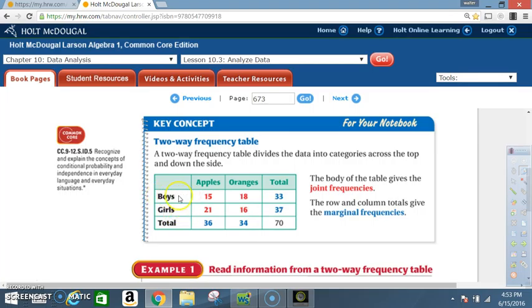Okay now remember when you go across that is a row. Going down is a column. Across left to right are rows. Down up and down are columns.